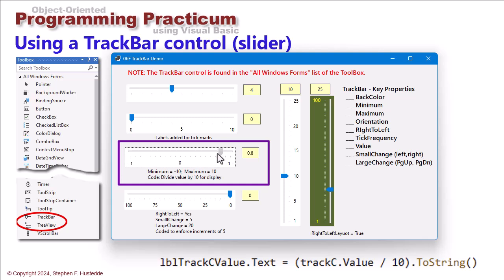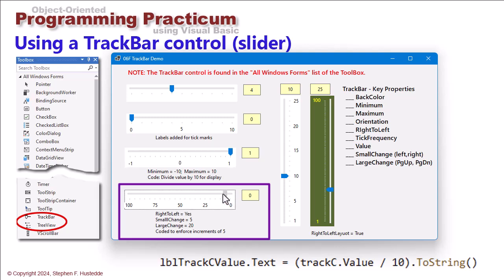But this allows me to get incremental values in tenths between minus one and positive one. On this last example we're going from zero to a hundred. Again I've set the right to left to yes, but I've set this up to only use increments of five.